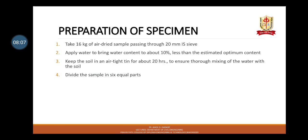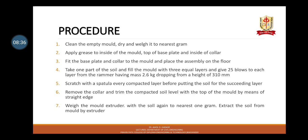For preparation of the specimen, take 16 kg of air-dried sample passing through 20 mm IS sieve. Apply water to bring water content about 10% less than the estimated optimum moisture content. Keep the soil in an airtight tin for about 20 hours to ensure thorough mixing of water with the soil, then divide the sample into 6 equal parts. For the procedure, clean the empty mould, dry and weigh it to the nearest gram, and apply grease to the inside of the mould, top of the base plate, and inside of the collar.